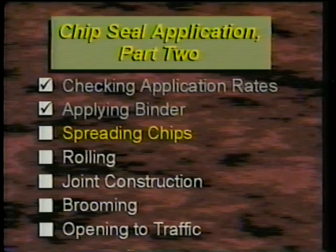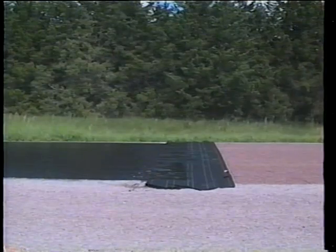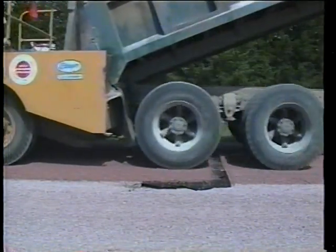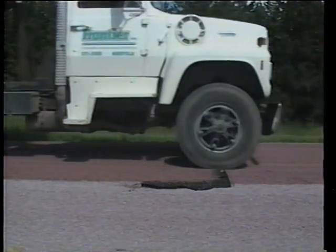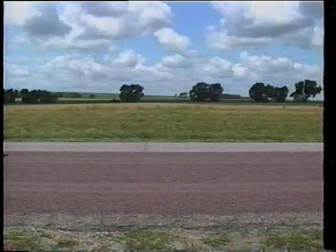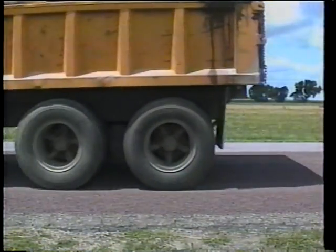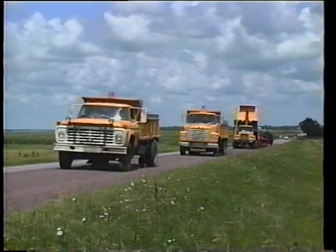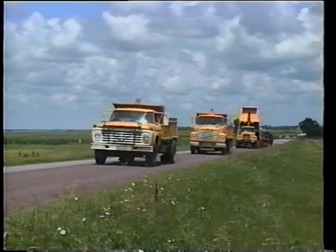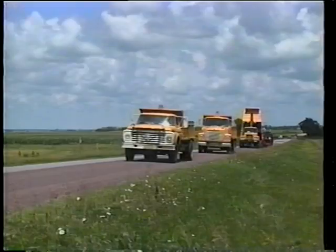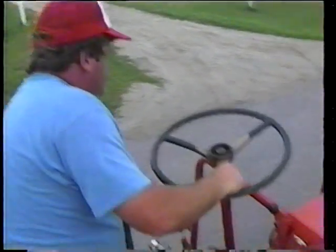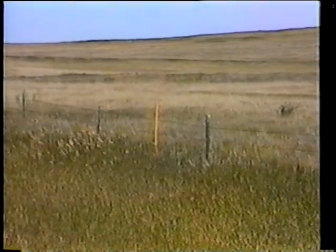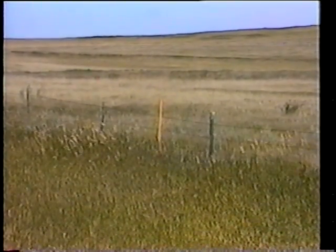Next comes the chip application. The chip spreader should also begin and end its applications on building paper to provide a neat clean edge. There should be enough trucks to supply the chip spreader steadily to avoid halting the operation — the aggregate haul distance and productivity rate are factors in determining how many trucks are needed. To control the chip application rate, the spreader operator should refer to the unit's tachometer and mark off the length that each truckload should cover.